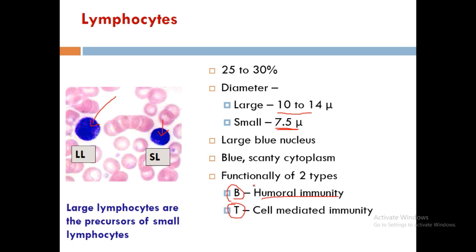Functionally, lymphocytes are divided into two types: B lymphocytes for humoral immunity and T lymphocytes for cellular or cell-mediated immunity. Large lymphocytes are the precursors of small lymphocytes.